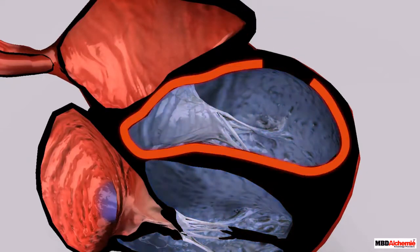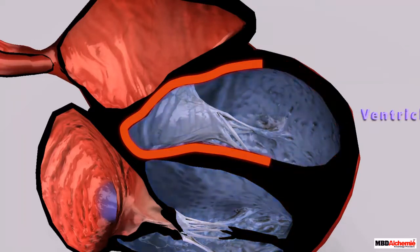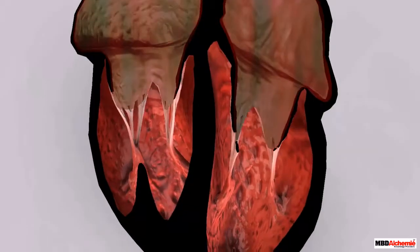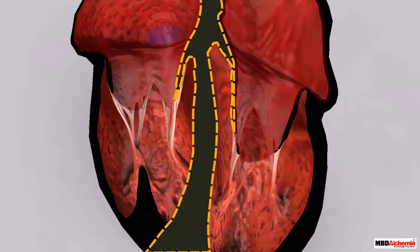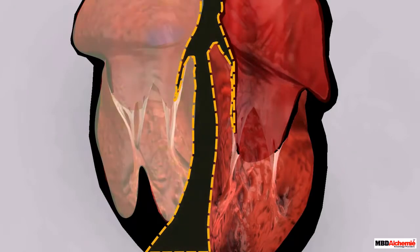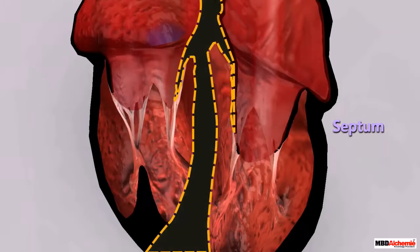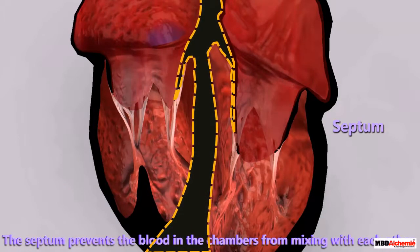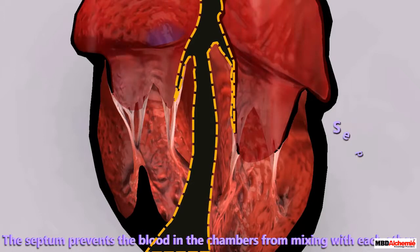The lower chambers of the heart have thick muscular walls and are called the ventricles. A thick muscular wall called the septum separates the chambers on the left from the chambers on the right. The septum prevents the blood in the chambers from mixing with each other.